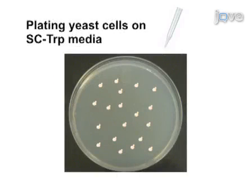As a second step, cells transformed by the RNA-containing oligo are plated on the selective media. This allows for growth of cells in which the RNA portion of the oligo serves as a template for the correction of the mutated marker gene.